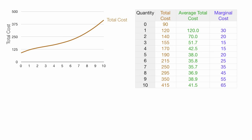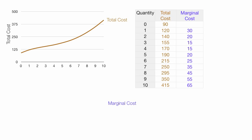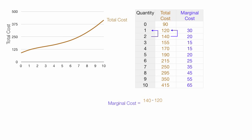Now I'm going to do the calculations for marginal cost. Marginal cost is a little different. If I take an output of 1 and increase it to 2, what happens is I have a change in quantity and a change in total cost. A change in total cost divided by a change in quantity is marginal cost. So I'll take 140 minus 120 and divide that by 2 minus 1. That is the change in total cost divided by the change in quantity, which equals 20 divided by 1, which is equal to 20 — and this is my marginal cost.